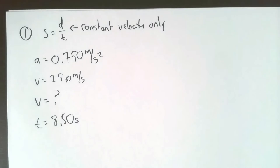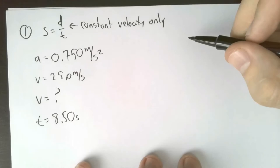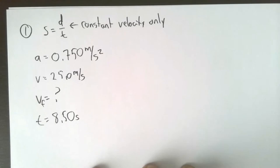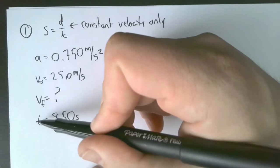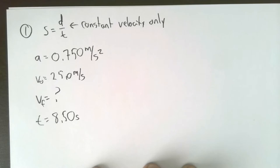What do we think? Are they asking us - they say find its velocity after 8.50 seconds. Are we trying to find VF or V0? Very good. We're looking for VF because they say after 8.50 seconds, what's the velocity after this time? So this 25 must be at the beginning of the time.